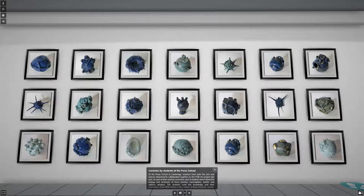At the Peirce School in Cambridge, teachers from both the arts and science departments collaborated together on the PDB Art Project last year. As part of their science curriculum, Year 9 students learnt about the biology and structures of three proteins: haemoglobin, keratin and salivary amylase. The students used this knowledge, and their exploration of the PDB archive, in creation of these fantastic ceramic artworks in their art lessons. The sculptures incorporate various structures from the biology of these proteins, including red blood cells, long keratin fibers and both protein and DNA helices.